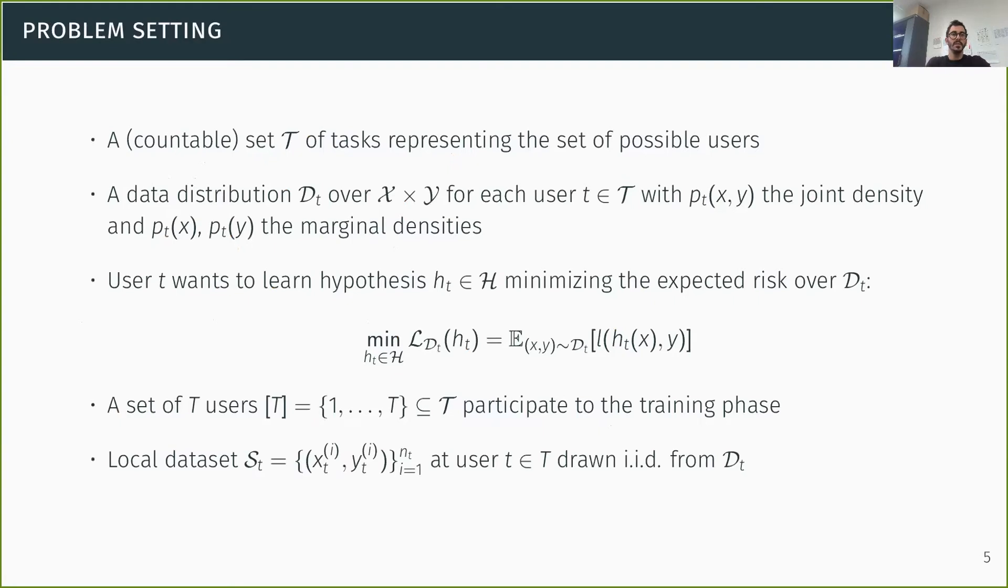So now that we have the teaser, let's try to introduce things a little bit more formally. The problem setting is the following. We have a countable set T of tasks that represent the set of possible users. And then with each possible user, there is associated a data distribution DT over X times Y. So this is supervised learning. And essentially, we would denote the associated densities for user T as PT. And then each user T ideally wants to learn a hypothesis that minimizes the expected risk over its distribution DT. Now, of course, typically, we don't have access to DT and we don't even observe all possible users at training time. And so we're going to assume that we observe only a subset of users during the training phase and that each of these users T has a local data set ST, which is sampled IID from its distribution DT.